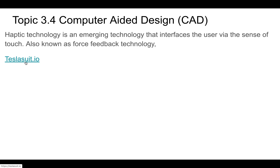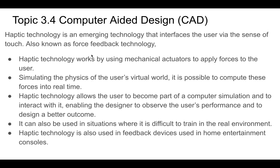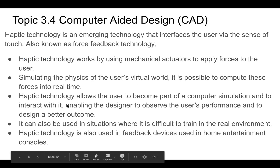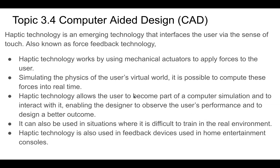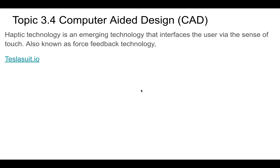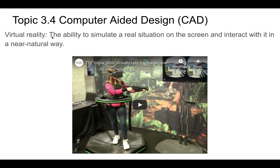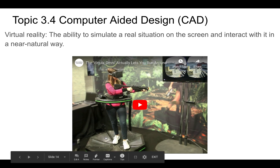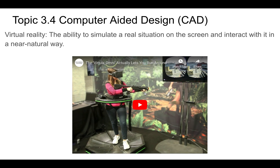There's a haptic suit from a company whose website and video you should visit — it gives you an idea of what their haptic suit does and comes back to simulating physics and allowing training in real-world environments. Virtual reality, or VR, is the ability to simulate a real situation on screen and interact with it in a natural way. There's a video showing a device that allows you to walk or run within these environments, and when you're wearing the VR headset, it makes you feel like you're actually there.